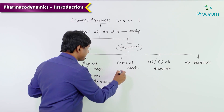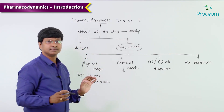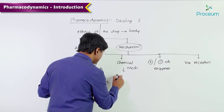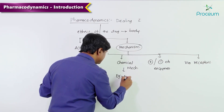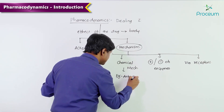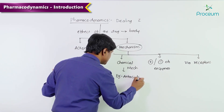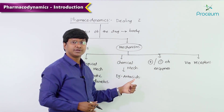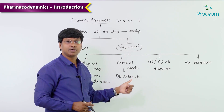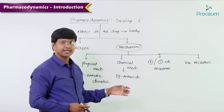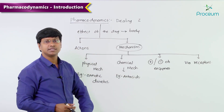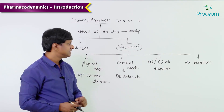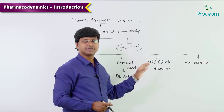For the chemical mechanism, the example is antacids — drugs used in the treatment of peptic ulcers, like sodium bicarbonate or calcium carbonate. These antacids act by the chemical mechanism.